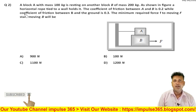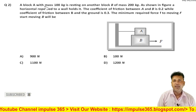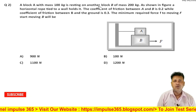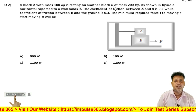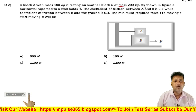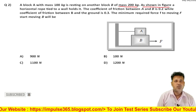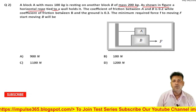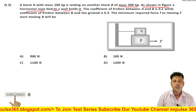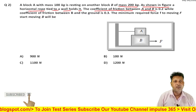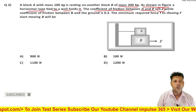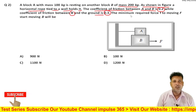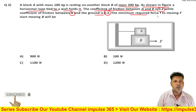Next question: Block A with mass 100 kg is resting on another block B with mass 200 kg, as shown in the figure. A horizontal rope tied to a wall is holding it. The coefficient of friction between A and B is 0.2, while the coefficient of friction between B and ground is 0.3. The minimum force required to move B is to be found.